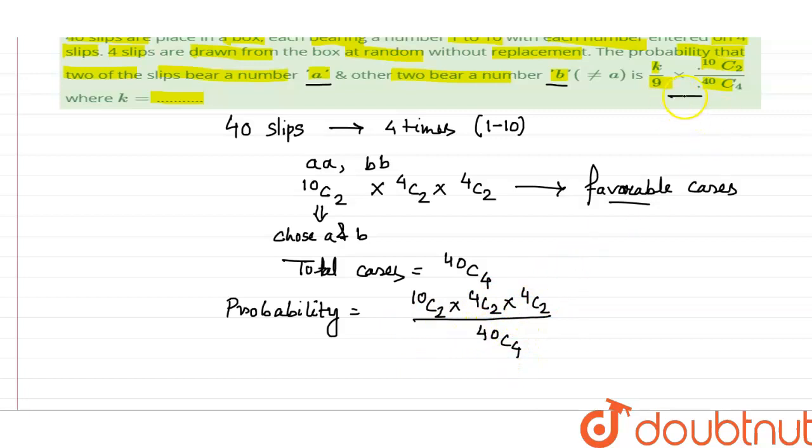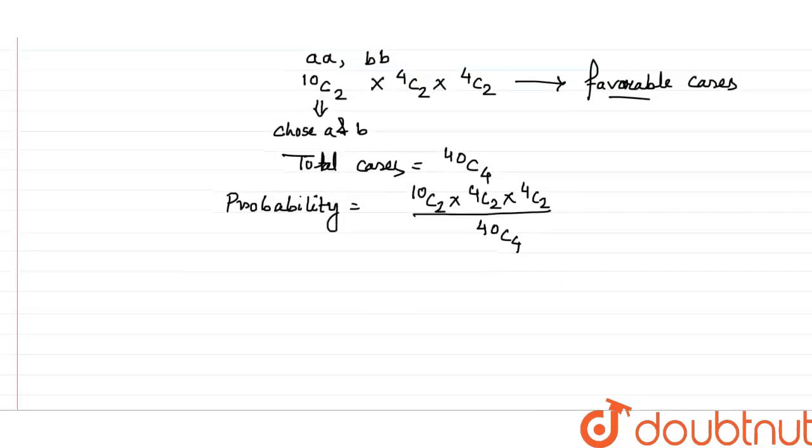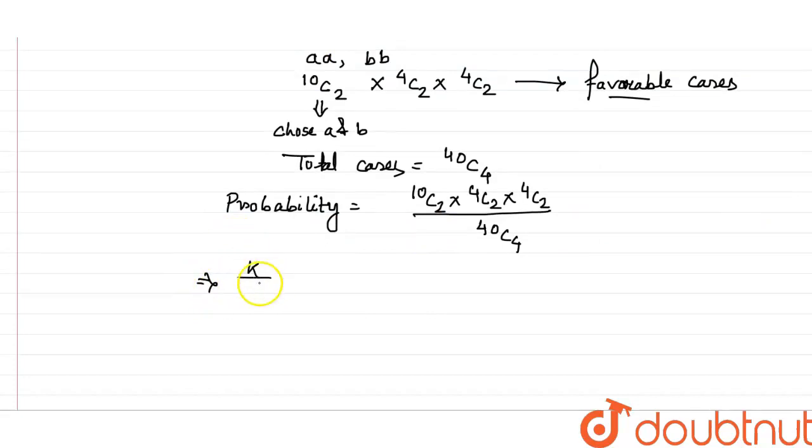You can see in the problem that is already given. Probability is already given. What is given here? That is K/9 × 10C2/40C4. That is given.